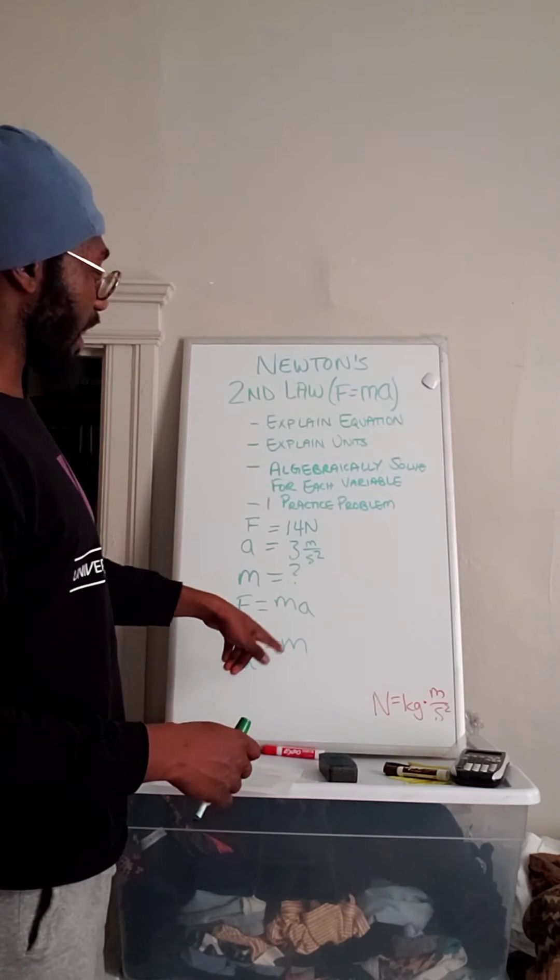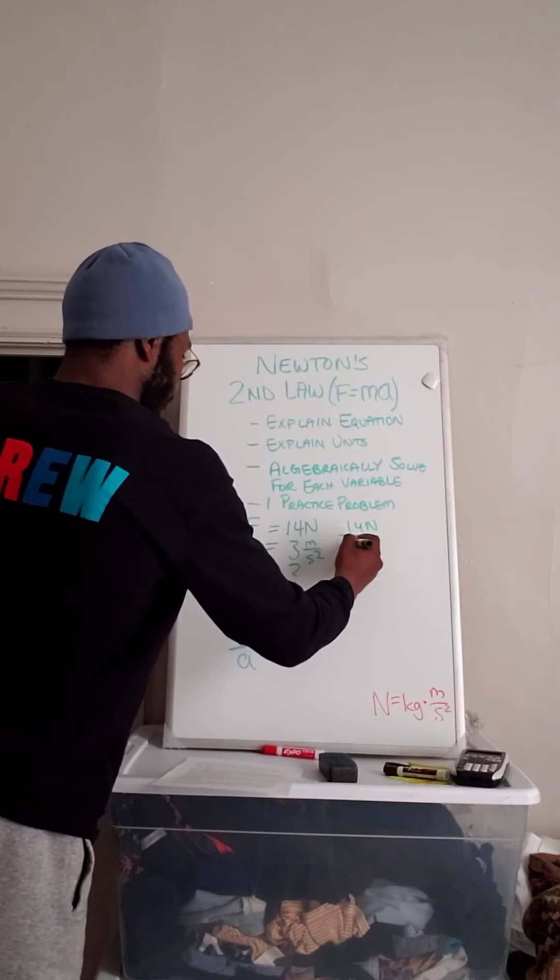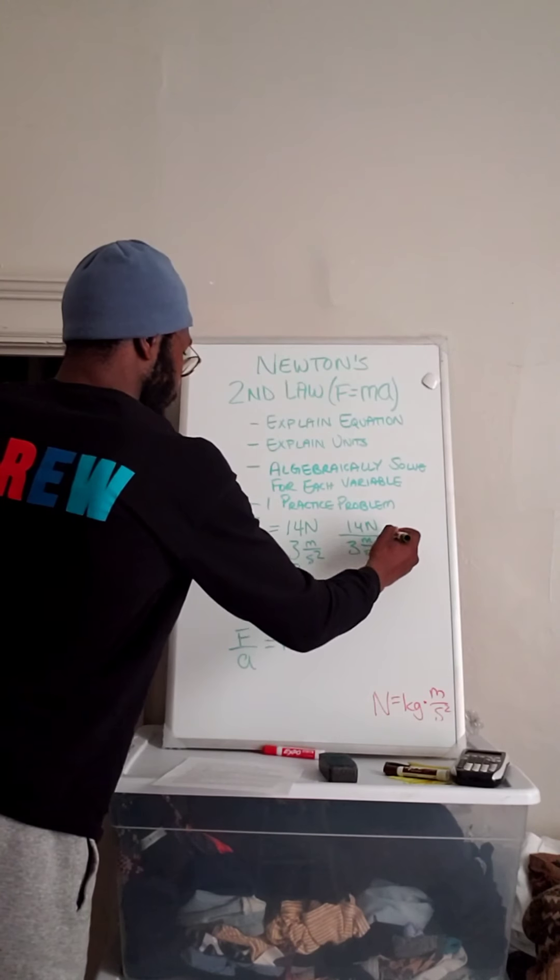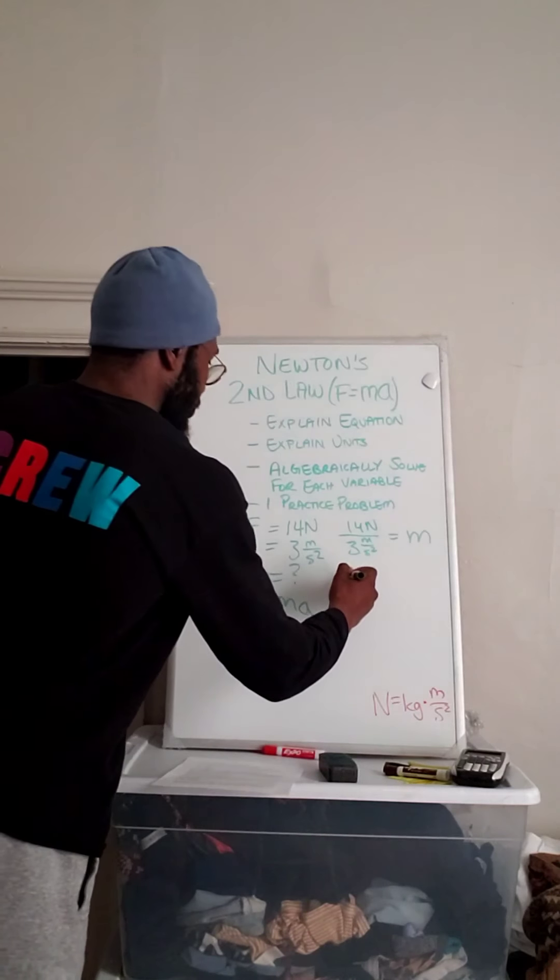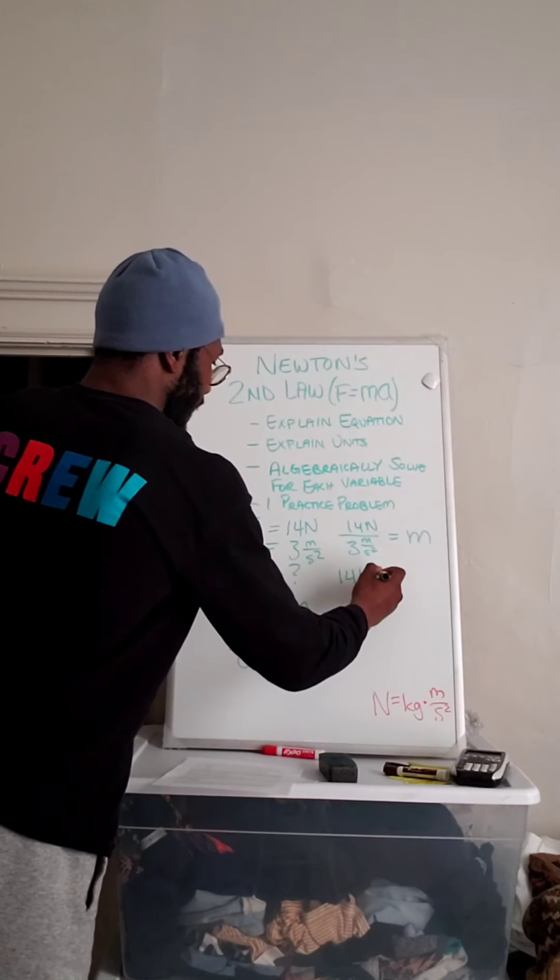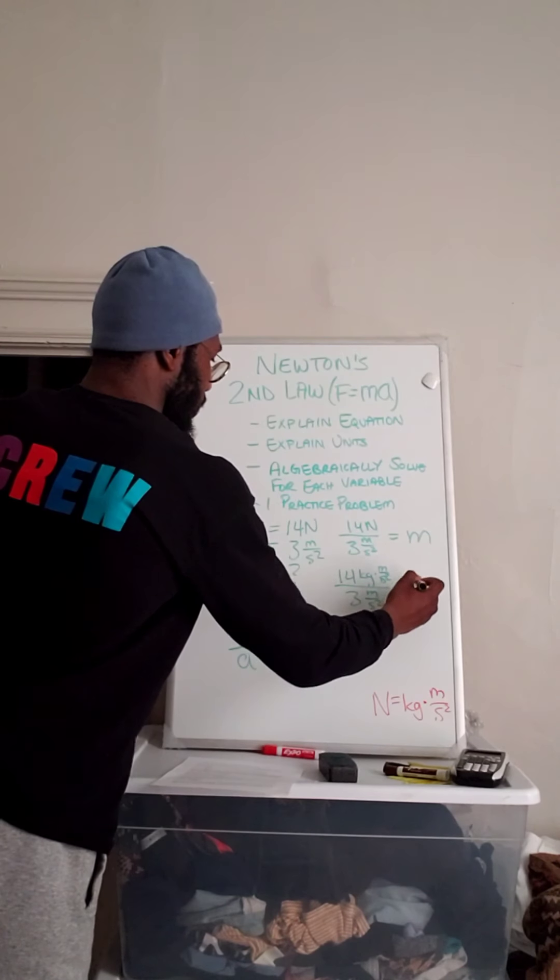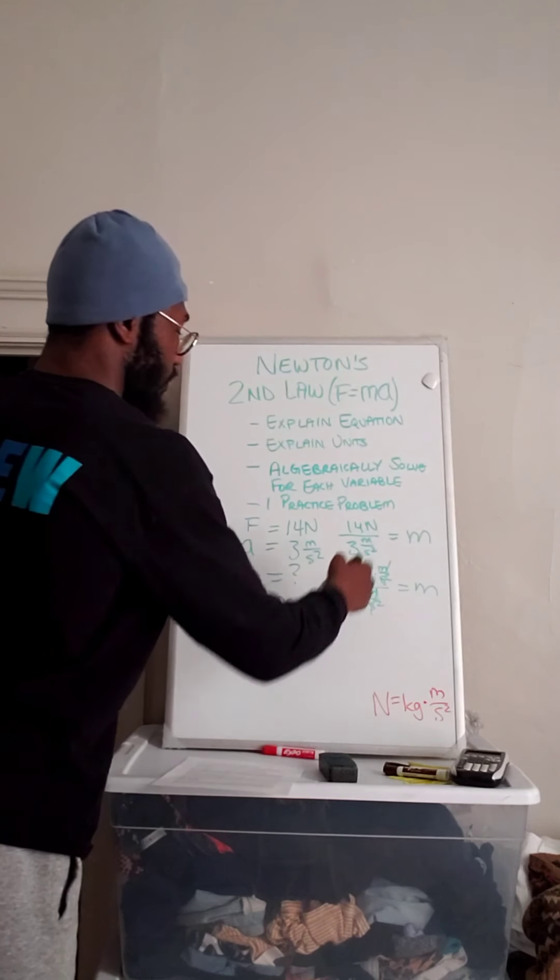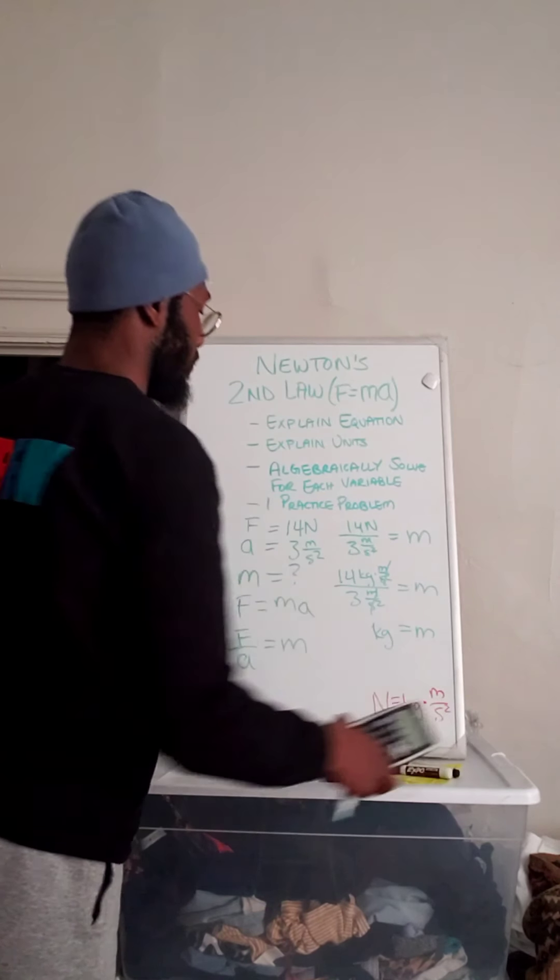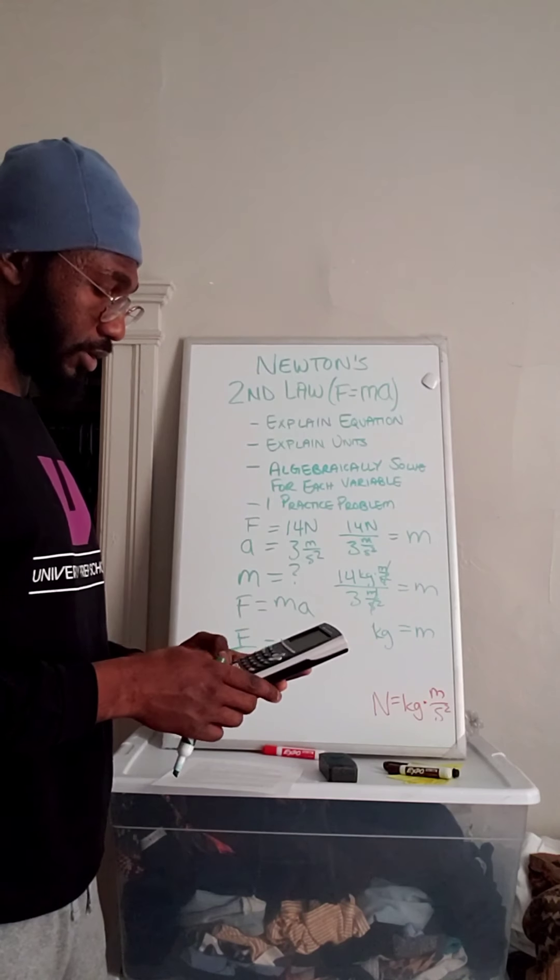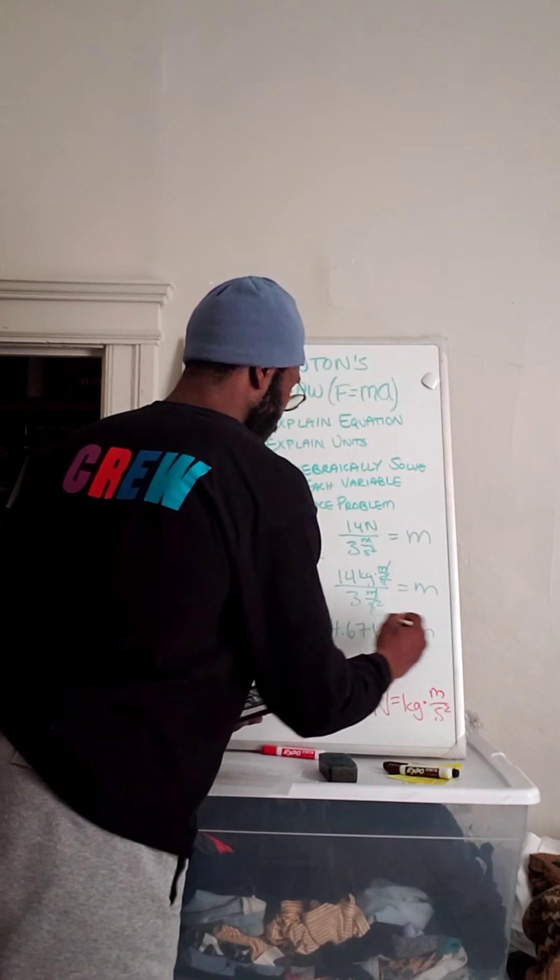So now we've got F divided by A equals M. So F divided by A is going to be 14 newtons divided by 3 meters per second squared, and that's going to equal M. Now we know again that newtons is equal to kilograms times meters per second squared, so let's put that in instead of the N for newtons. We know the meters per second squared cancels numerator and denominator. I'm left with the unit of kilograms, which is good because I know mass is supposed to be in the unit of kilograms. So 14 divided by 3 equals 4.67 kilograms. That's my final answer.